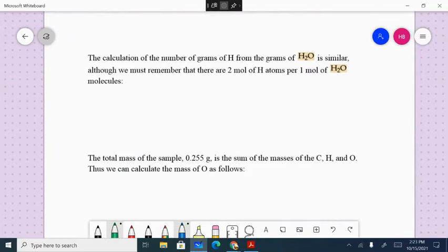The calculation of the number of grams of hydrogen from water is similar, although we have to remember that two hydrogen atoms are in each water molecule. So my given quantity in the problem was 0.306 grams of water was produced.